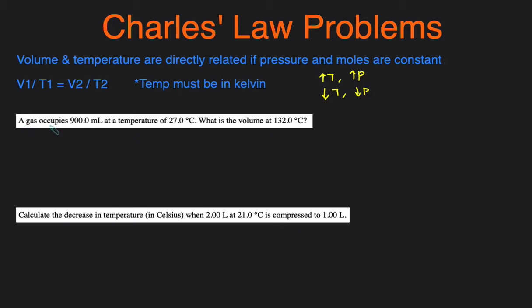The first one says the gas occupies, so it gives us a volume, and then it gives us a temperature. But you can see the temperature is currently in Celsius, not in Kelvin, and is asking us for a new volume, and it gives us a new temperature. So we'll just call the original V1 and T1, and the volume we're solving for is V2, and that will be T2.